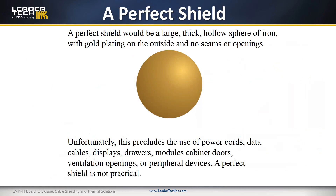So what would be an example of a perfect shield? The ideal shield is a large, thick, hollow sphere of iron with gold plating for maximum conductivity and no seams, gaps, or openings. Obviously this isn't manufacturable or feasible, because you wouldn't have any openings for power cords, cables, connections, or anything like that. So we have to design our shields so that they still work in the real world but still provide the best levels of shielding effectiveness.